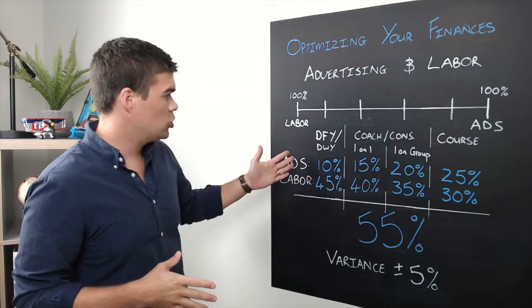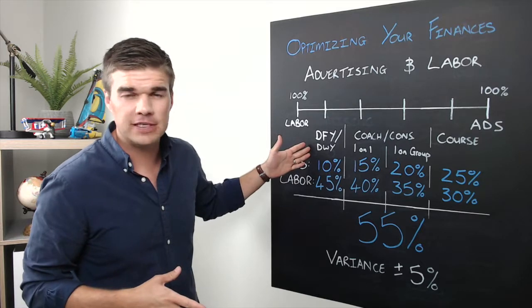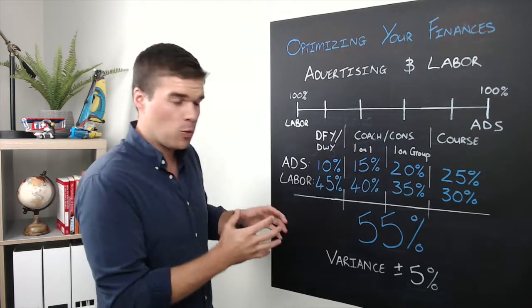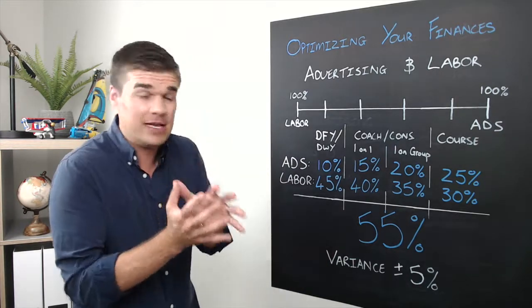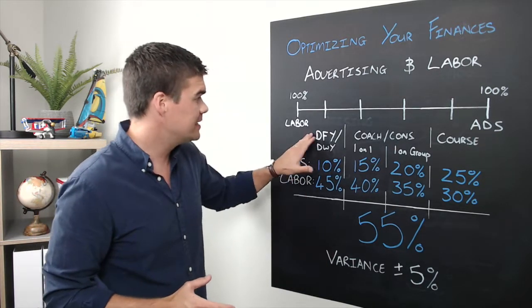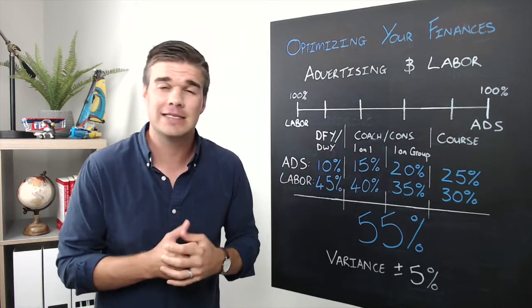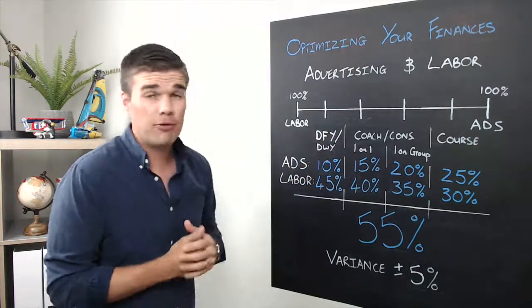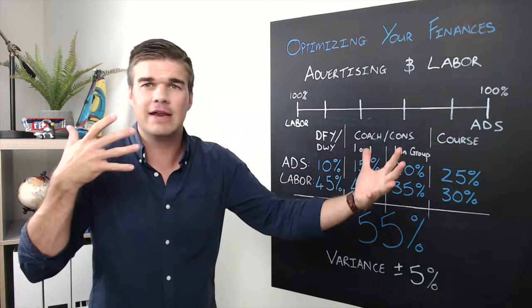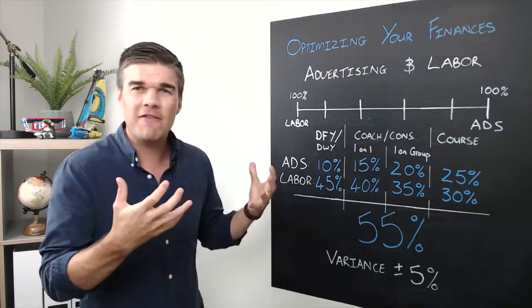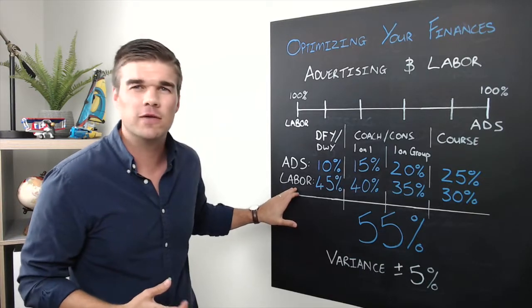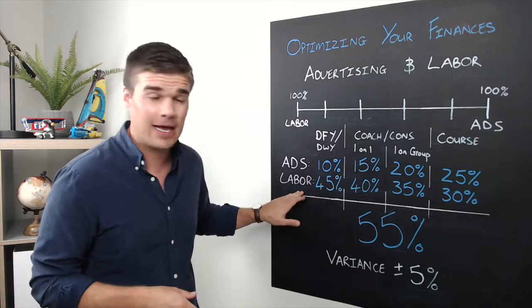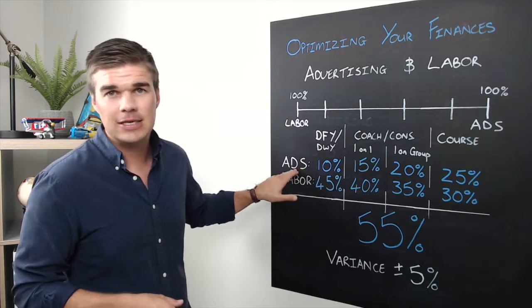So I'm going to start with a done-for-you and done-with-you service. If you're doing a done-for-you or done-with-you, your ratio within this 55% is going to be heavily towards labor. The reason why is done-for-you, done-with-you, the lifetime value of a client is considerably more than that of, for instance, a course. You're probably charging a premium, but you also have capacity issues. You can't just have an infinite number of clients, so the bigger focus there is making sure we're rendering the service or delivering the product that we really need to deliver. So we attach 45% to labor and 10% to advertising.